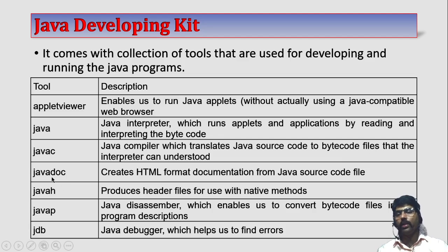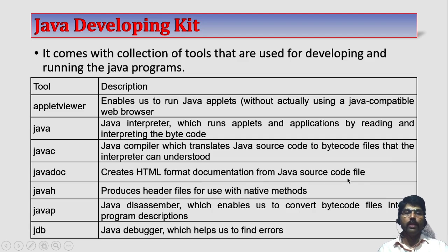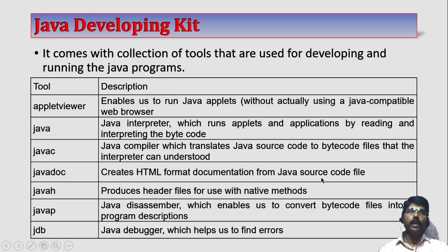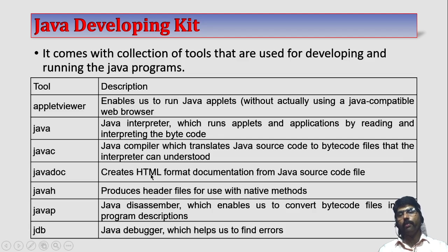Java Doc — doc means documents. It creates an HTML format documentation for Java source code files. In Java source code, we create many documentation comments, explaining each and every class, methods, and variables. This documentation part is converted from source code into HTML format with the help of Java Doc.